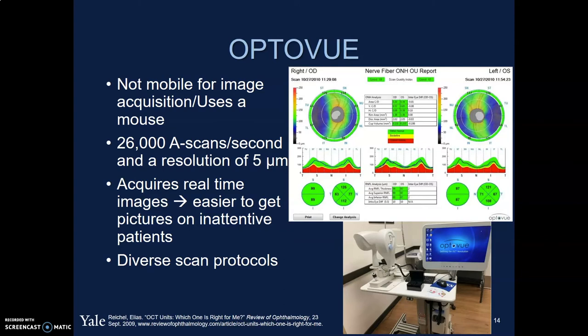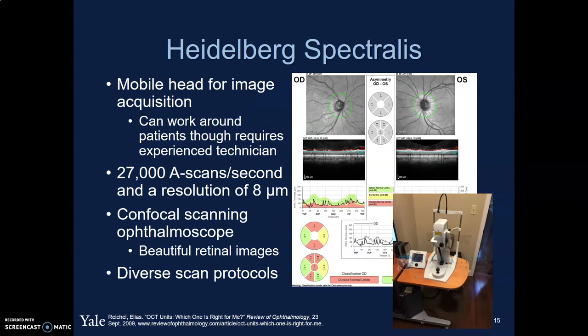Next, the OptiView. Also not mobile, still reliant on patients. It does about 26,000 scans per second and has a resolution of about 5 microns. It requires real-time images, which makes it a little bit easier to get pictures on inattentive patients. And finally, there's the Heidelberg Spectralis, which has a mobile head for image acquisition, so you can move the head around to get around various obstacles — like a large exotropia or a scar on the cornea — to get better image quality. It requires a little more experience to use, but is less patient-reliant. It does about 27,000 scans per second with a resolution of about 8 microns.